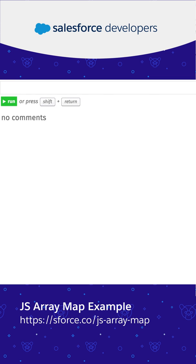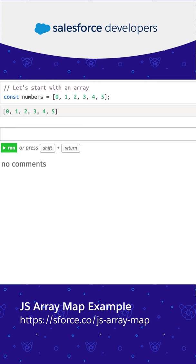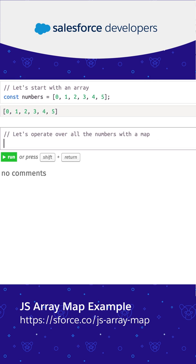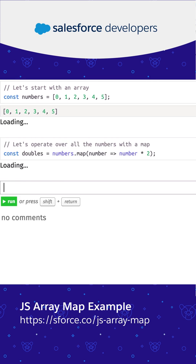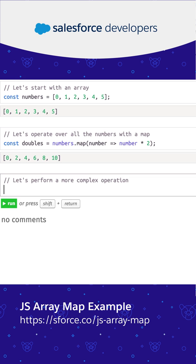Let's start with an array of numbers, then double the values by multiplying each element by 2. Since map returns a new array, we can chain another map operation.